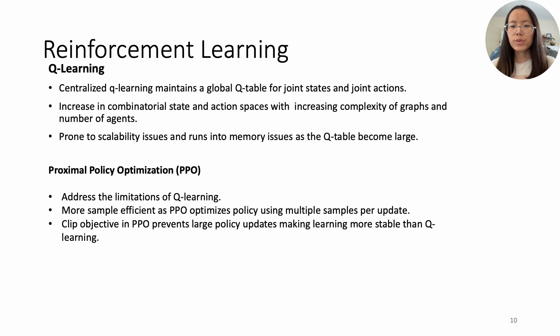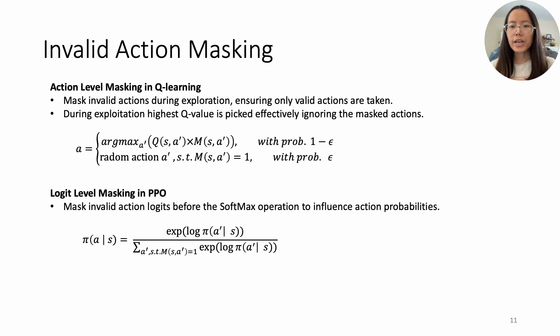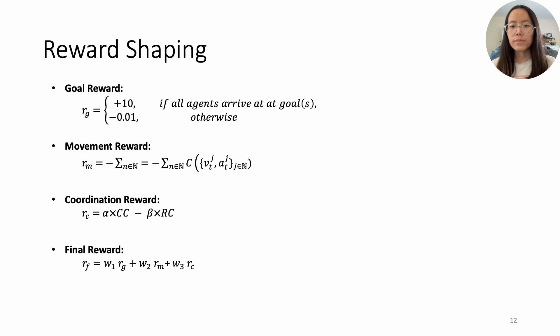We use Q-Learning and PPO in our implementation. We incorporated action level masking in Q-Learning and logit level masking in PPO for invalid actions. We design our reward function to promote agent coordination and minimize cost.